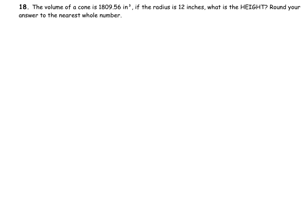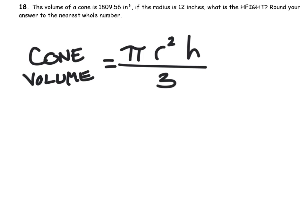Alright, let's look at the formula for finding the volume of a cone first. And that is the same as the volume of a cylinder, π r squared times the height, but a cone is a third of that volume. So we should have something like this.